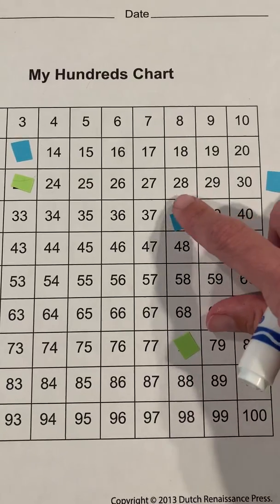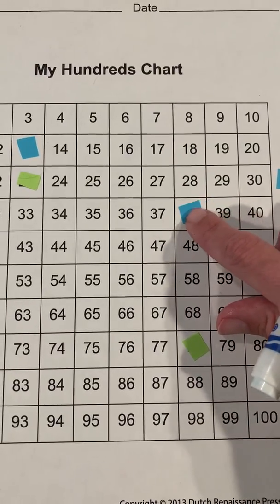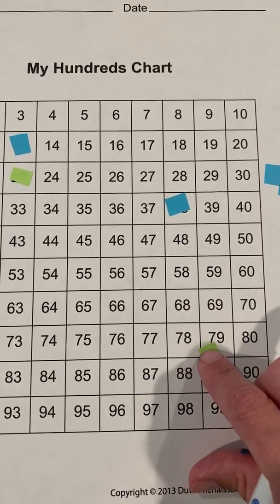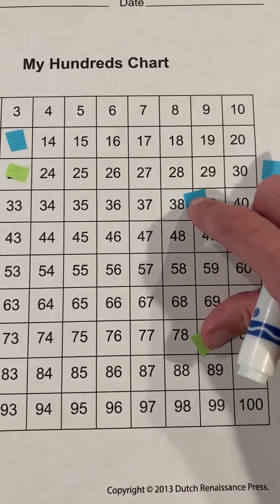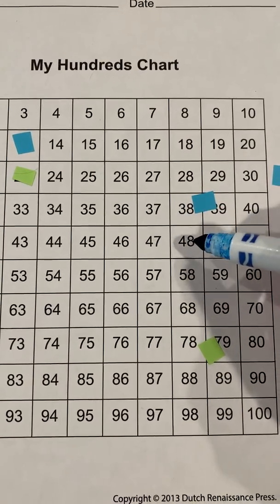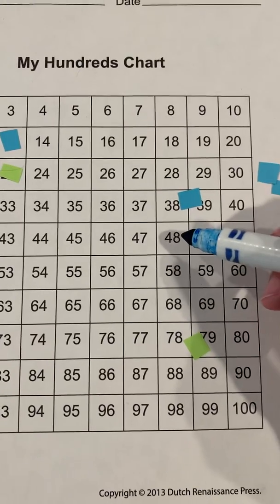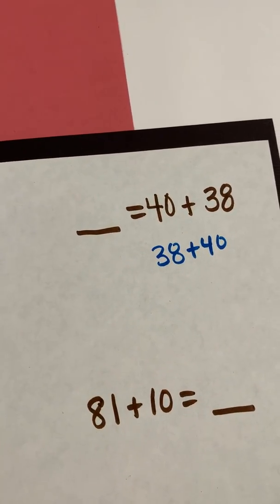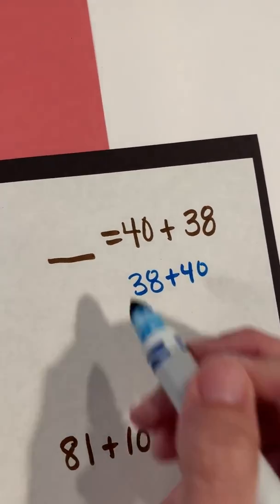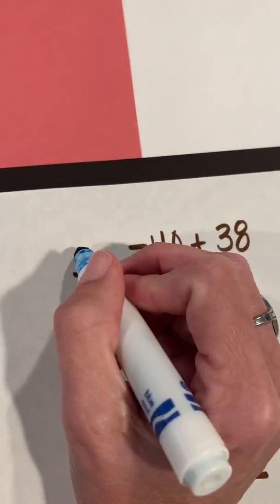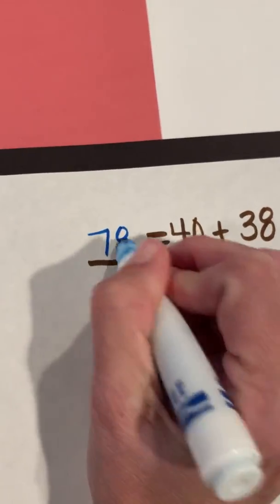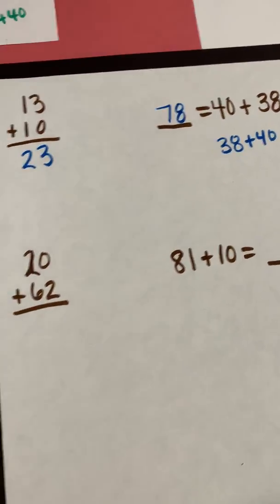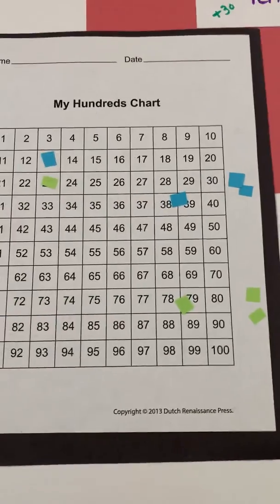So 38 plus 40 gives me 78. Once again, you notice as we move down, the only digit that changes is the digit in the tens place: plus 10, plus 20, plus 30, plus 40. So 40 plus 38 or 38 plus 40 gives us a sum of 78. So we recognize that pattern.